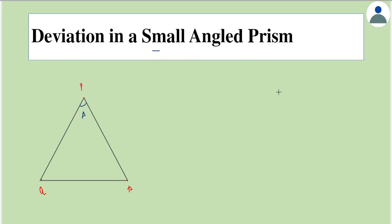If A is very small, it would mean that the two faces are almost parallel to each other. So if this is A, in that case the deviation would be less also. So if A is small, then even D becomes small. It's called a small angled prism.